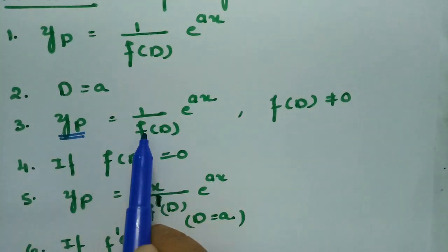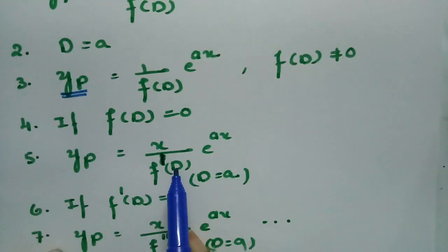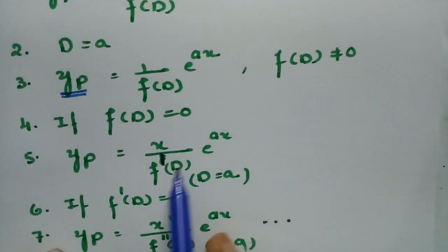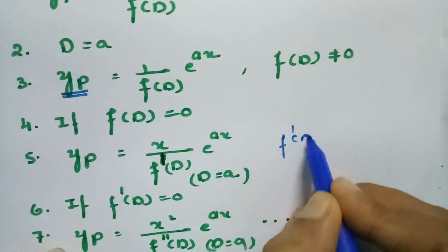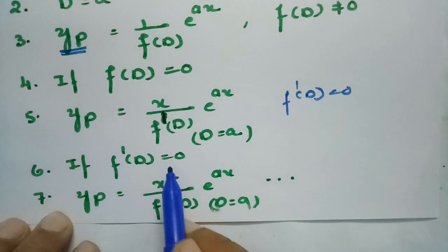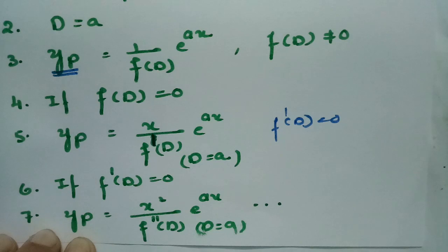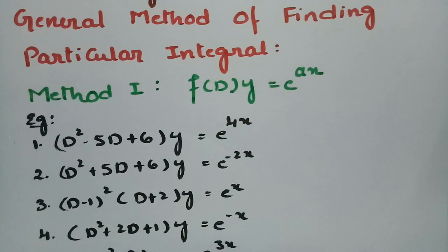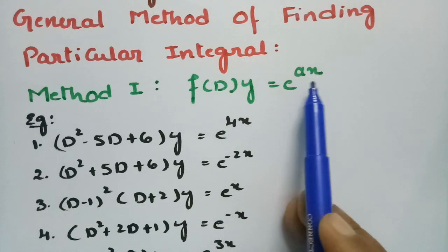If f(D) equals zero after substitution, we write an x in the numerator and take the derivative f'(D), then substitute D = a again. If f'(D) is also zero, we write another x and take the second derivative, continuing until we get a non-zero value. This is the complete method for the single e^(ax) form.